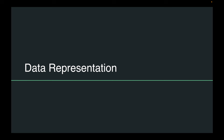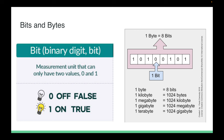The next section is data representation, which is where we'll have the most math. Data representation hinges on the fact that data in computers is represented in the form of bits, which constitute bytes. One byte is 8 bits; one kilobyte is 1024 bytes; one megabyte is 1024 kilobytes; one gigabyte is 1024 megabytes; one terabyte is 1024 gigabytes. You may get a question about converting between these units.